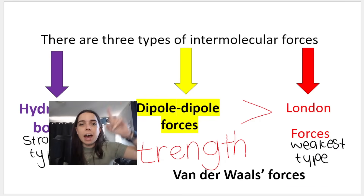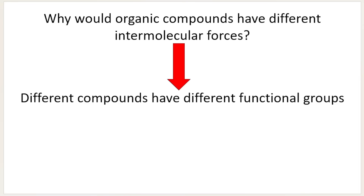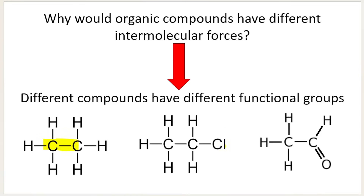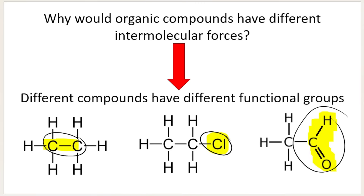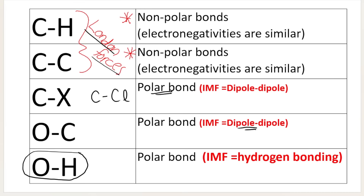Why would they have different intermolecular forces? They have different intermolecular forces because they have different functional groups — this is carbon-carbon, this contains a halogen, this contains a double bond oxygen. As you can see from this table, if you have carbon-carbon or carbon-hydrogen bonds only, those are non-polar bonds, so you have London forces. But as soon as you have carbon bonded to a halogen like chlorine, that's a polar bond, so you have dipole-dipole forces. Same with oxygen and carbon — polar bond, dipole-dipole forces. And as soon as you have oxygen bonded to hydrogen, that's the special type: hydrogen bonding, the strongest.